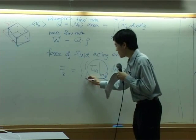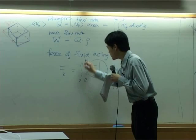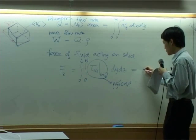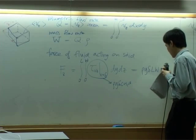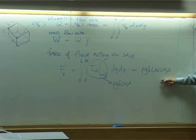Simply, you integrate from 0 to w, 0 to l. As a result, you get rho g delta wl cosine beta. That's the force.